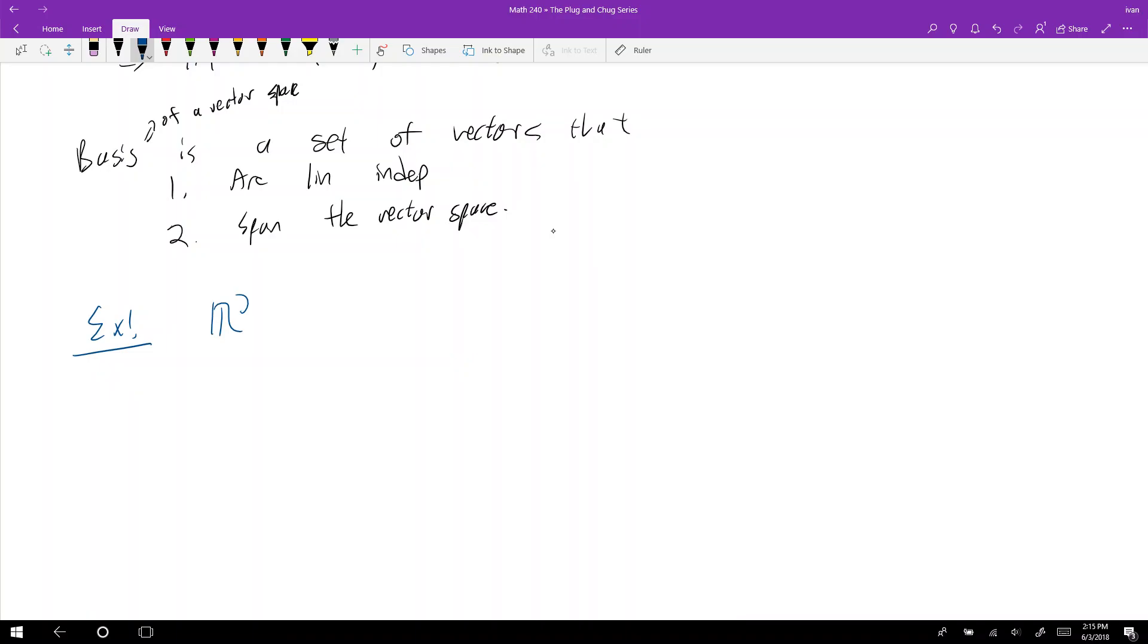So, for example, if we have R2, which you can think of as the xy plane, what is a basis for R2? A basis for R2 can be this vector which is (1, 0), and then this vector which is (0, 1). Because obviously they're linearly independent, and they span R2.